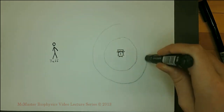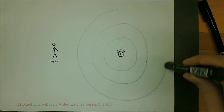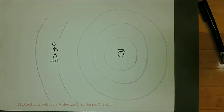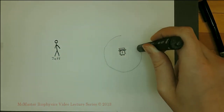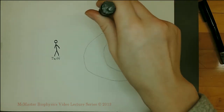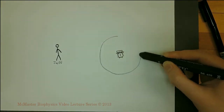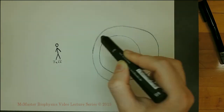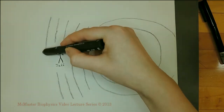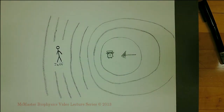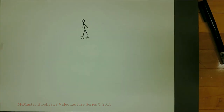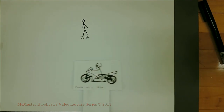If Jeff listens to a sound while neither the source nor Jeff is moving, he hears the true pitch or frequency. If Jeff listens to the sound while the source moves away from him, the wave is more spread out and the pitch appears lower to Jeff than it really is. If the source moves towards Jeff, the opposite occurs and the sound appears higher because the areas of expansion and compression are closer together. If Annie drives by Jeff on her motorcycle, the frequency perceived by Jeff is first increased as she moves towards him, then decreased as she drives away.